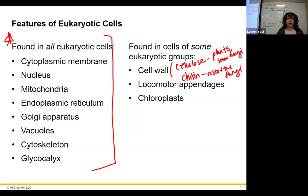Eukaryotes can have locomotor appendages — just like the flagella we talked about before, but eukaryotes can have more different kinds, not just flagella. And then we have chloroplasts, which are for photosynthesis. They contain chlorophyll, the green pigment that reacts with the sun and makes energy for the plant.